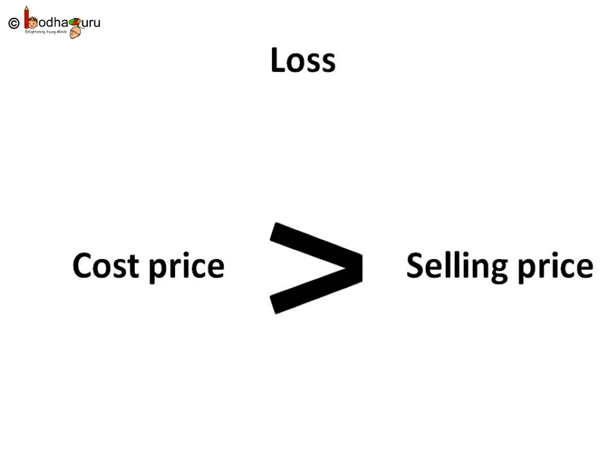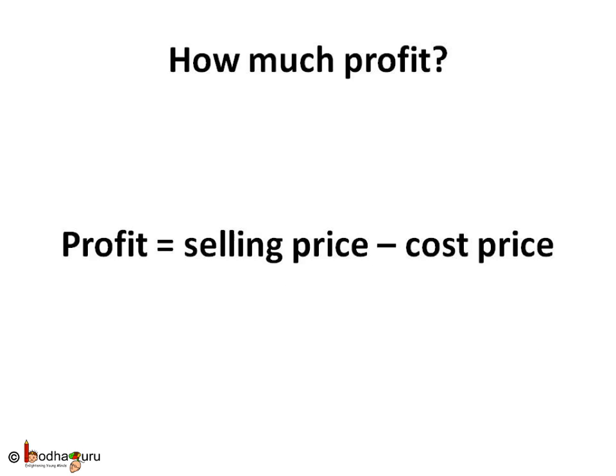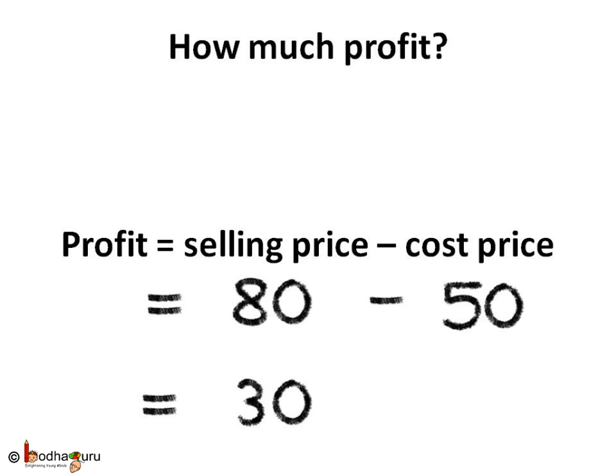If some day he makes lesser money than what he has spent, then we say it is a loss. Loss means cost price is greater than the selling price. Like, if some day Rahim earns only 40 rupees by selling the sandwiches, and the cost price at which he bought the vegetables is 50 rupees, which is greater than what he earned, then he couldn't even recover what he spent. So he made a loss. Cost price 50 is greater than the selling price which is 40. We see profit is selling price minus cost price.